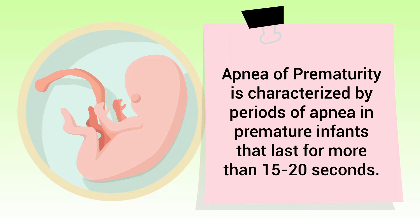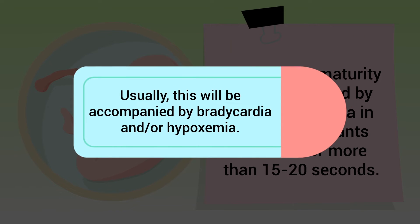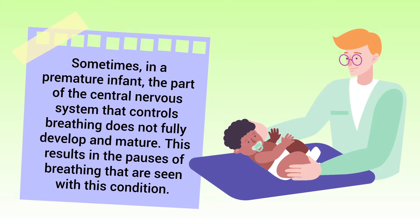Apnea of prematurity is characterized by periods of apnea in premature infants that last for more than 15 to 20 seconds. This is usually accompanied by bradycardia and/or hypoxemia. Sometimes in a premature infant, the part of the central nervous system that controls breathing does not fully develop and mature.